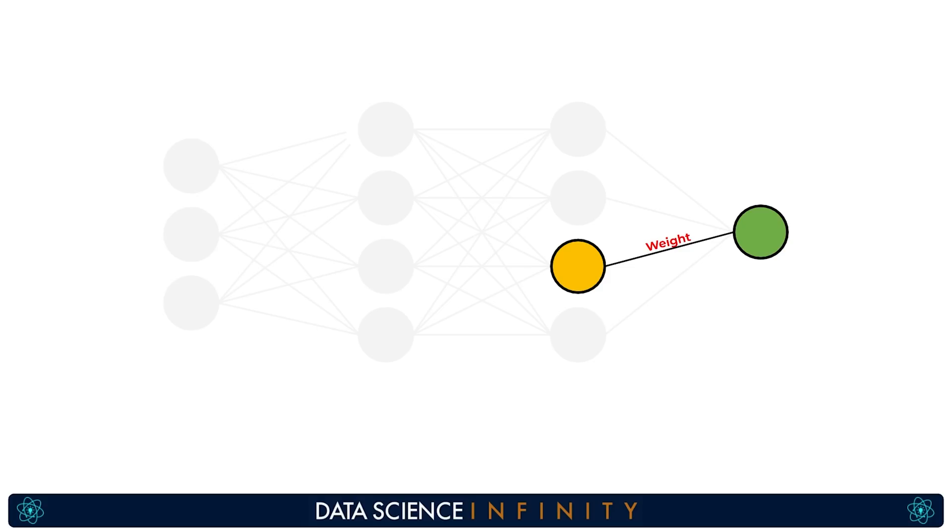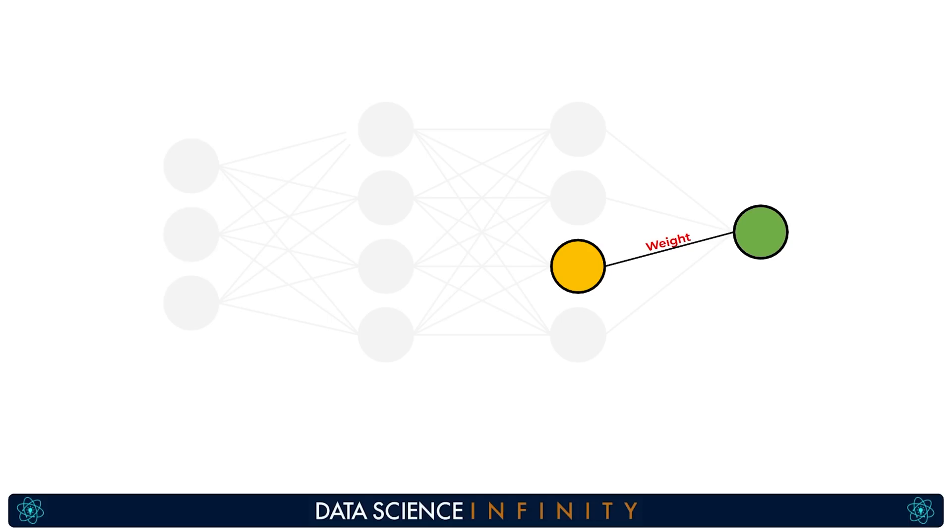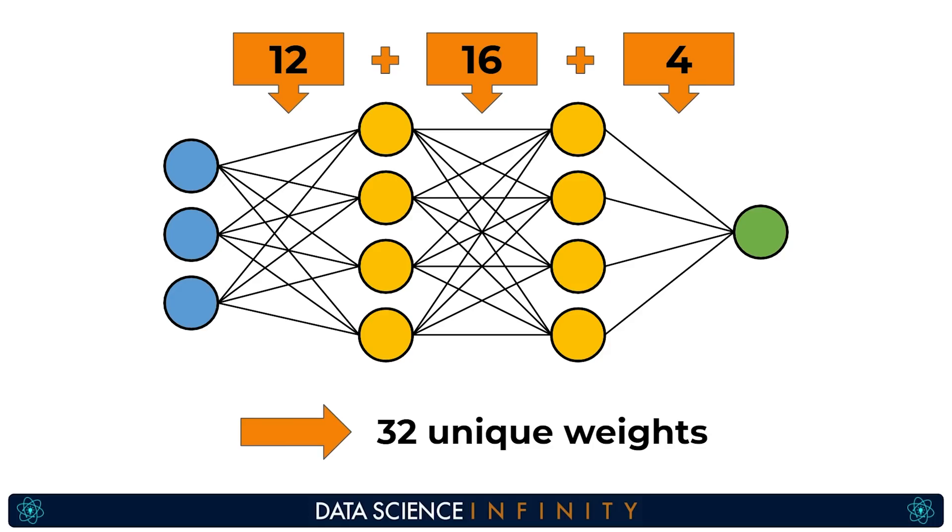So the overall takeaway from all of this is that there is a unique weight value for every connection meaning that in our example network here with three neurons in our input layer two hidden layers consisting of four neurons each and a single output layer neuron we would have a total of 32 unique weight values. So one on each and every one of those black connection lines.